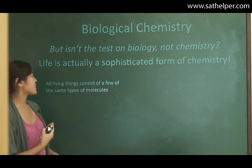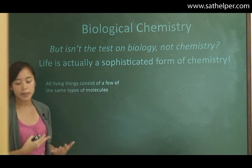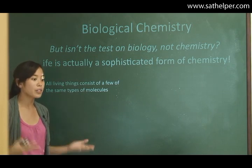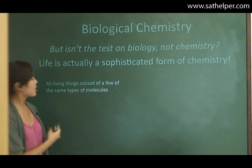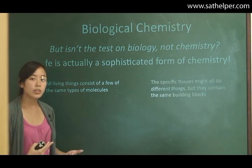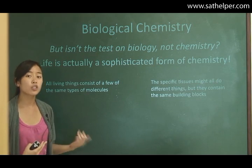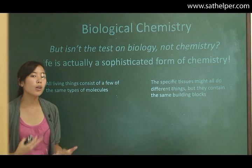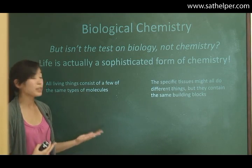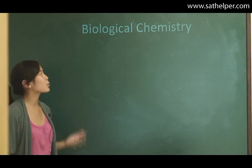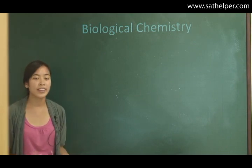All living things consist of a few of the same types of molecules. And molecules, that's usually like a chemistry thing, but all living things consist of the same types of molecules. The actual tissues of living things might do different things, might have different purposes, but they're all made up of the same building blocks. So, what are these building blocks? What are these molecules that all living things contain?